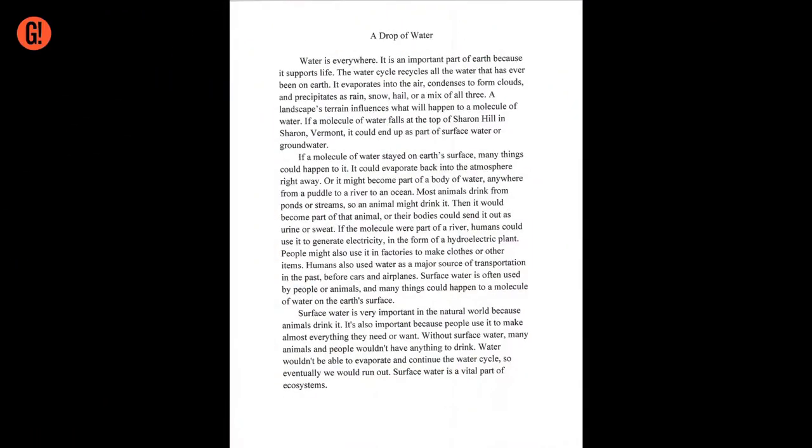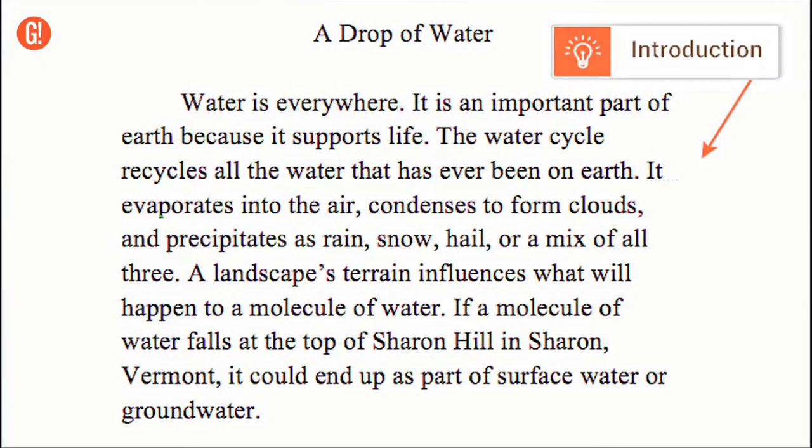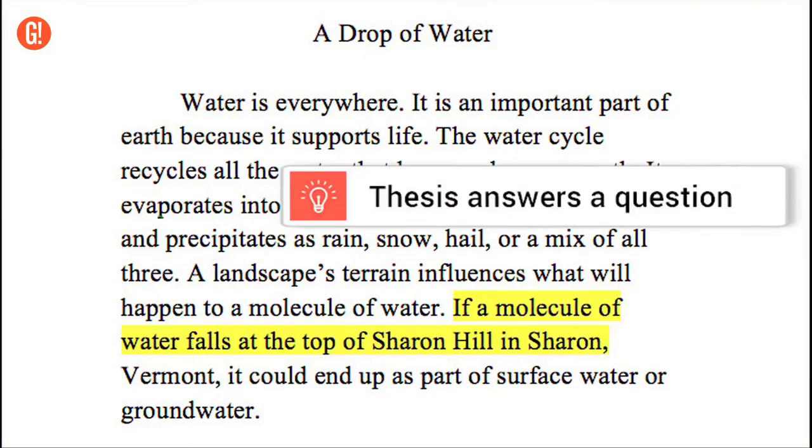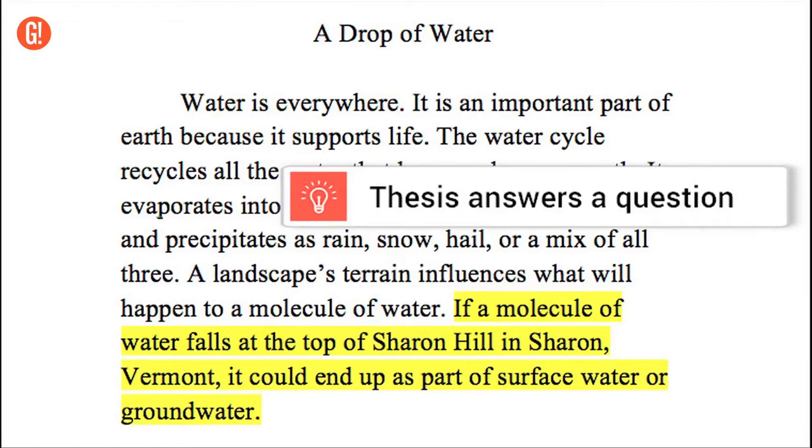Here's an example of a paper a kid did for science about what happens to a water molecule. She starts with an introduction that introduces the topic and why it's important. That intro should have a thesis statement that answers the question of what happens to a water molecule. This one has two parts. A water molecule can become surface water or groundwater.